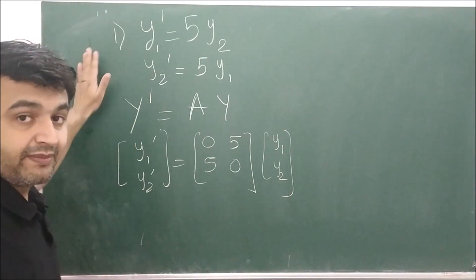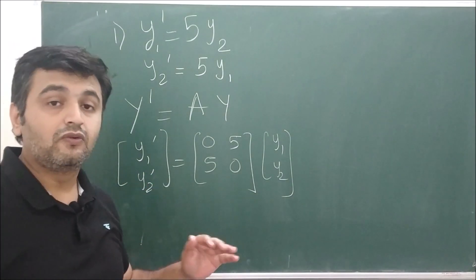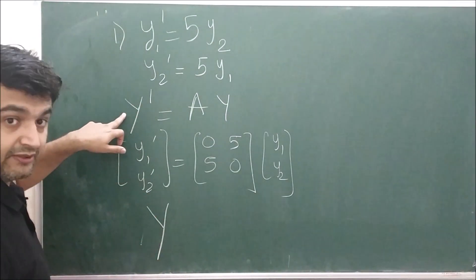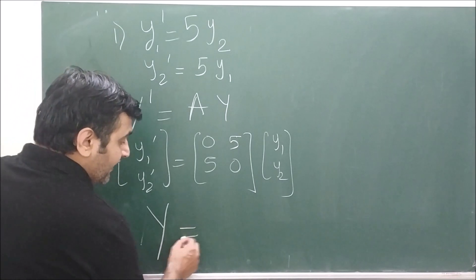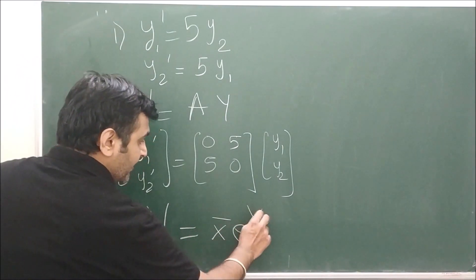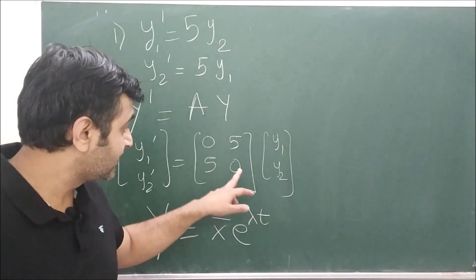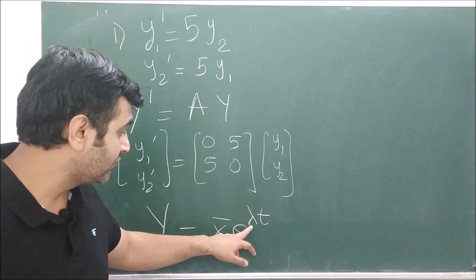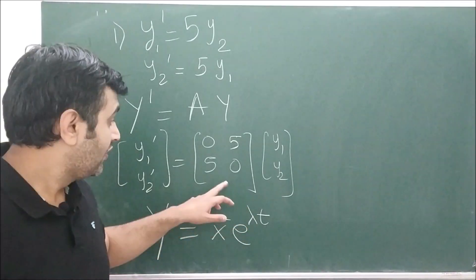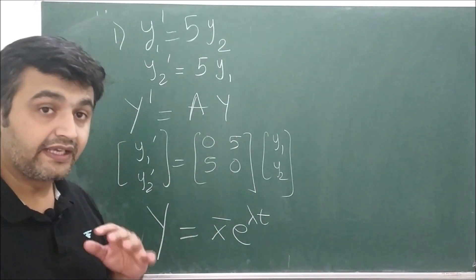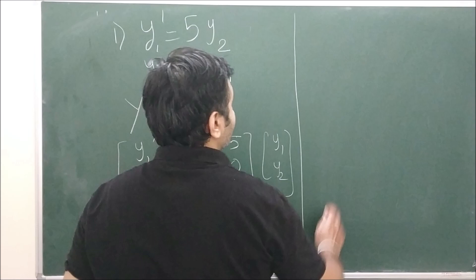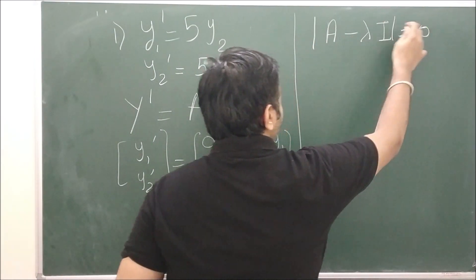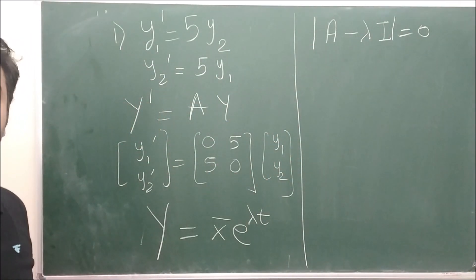Now you have matrix A. From our last lecture, if y is a solution of this system of differential equations, then y is of the form x̄·e^(λt), where λ is the eigenvalue of matrix A and x is the eigenvector corresponding to λ. So our first job is to find the eigenvalues of A. To find eigenvalues, you solve the equation obtained from det(A − λI) = 0.